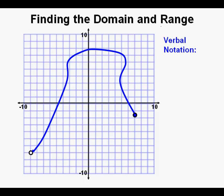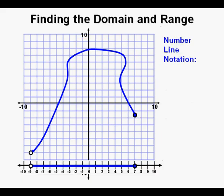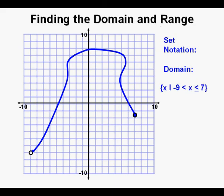Let's look at this relation. Verbally we have x is greater than negative 9 because there's an open circle at negative 9, and also x is less than or equal to 7. On the number line we see the open circle at negative 9, the closed circle at positive 7, and the interval between filled in with a blue line segment. For the inequality we have x is greater than negative 9 and less than or equal to 7 — the x is sandwiched between the negative 9 and the 7. For set notation we have x such that x is greater than negative 9 and less than or equal to 7.